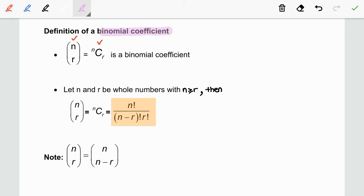Now, for your information, n choose r is equal to n choose n minus r.